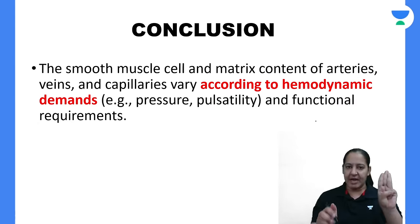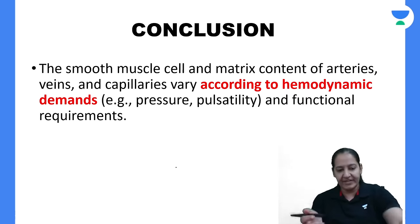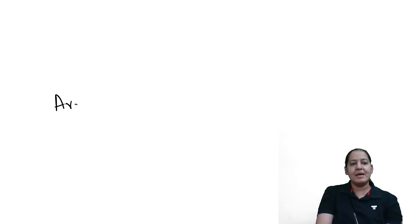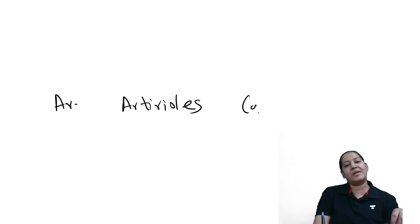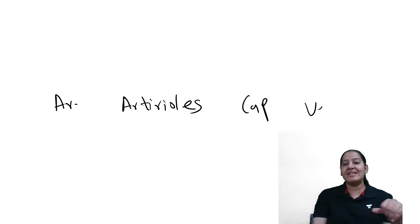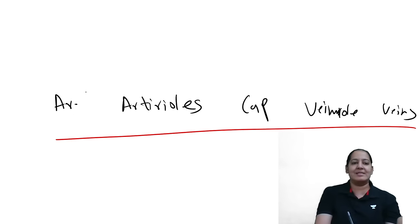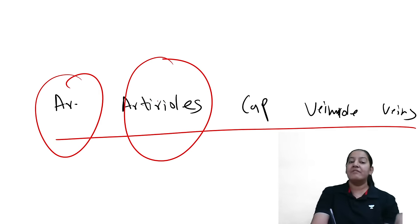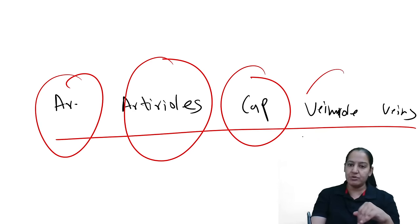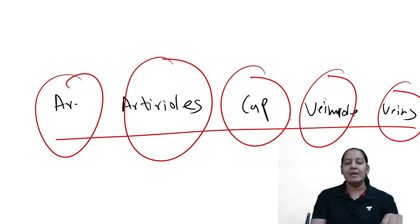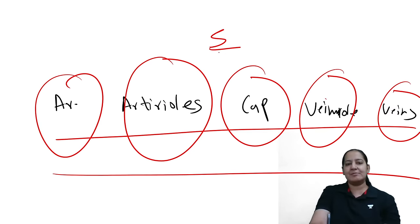There are five types of blood vessels in total. Arteries give rise to arterioles, arterioles give rise to capillaries, capillaries give rise to venules, and venules lead to veins. These are the five types of blood vessels present in humans. Which blood vessel is present at which location depends on the hemodynamic demand of that particular organ.